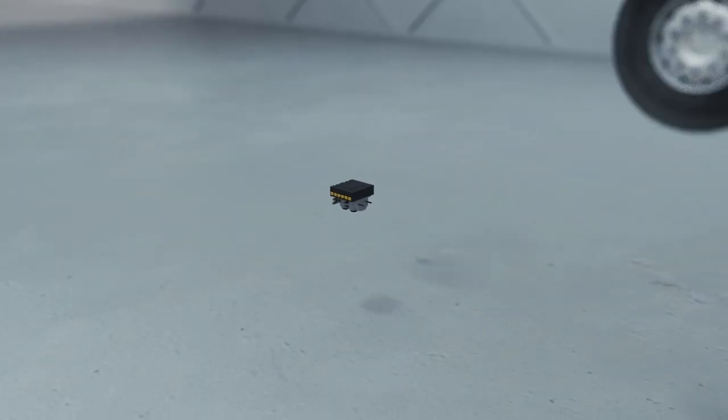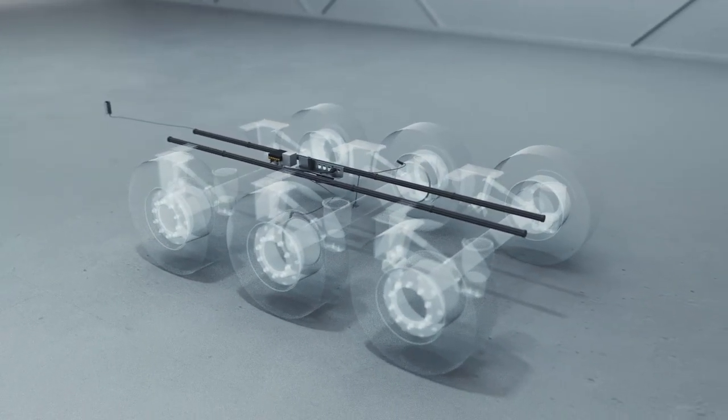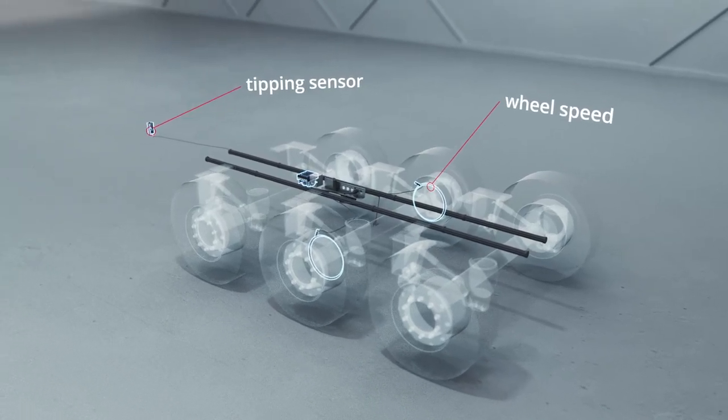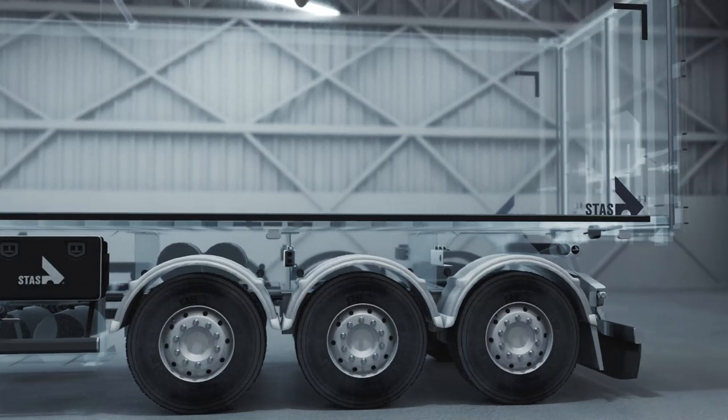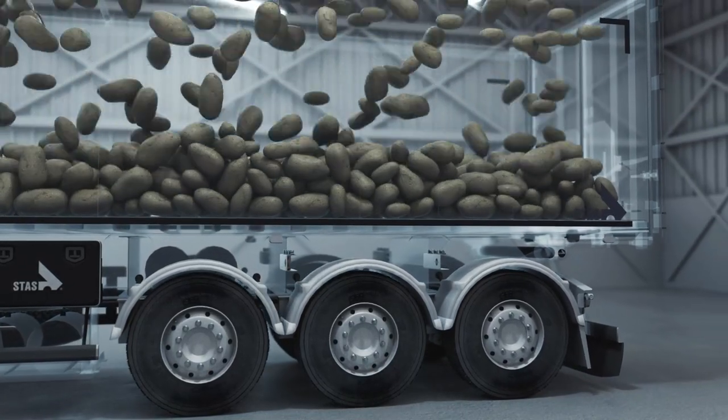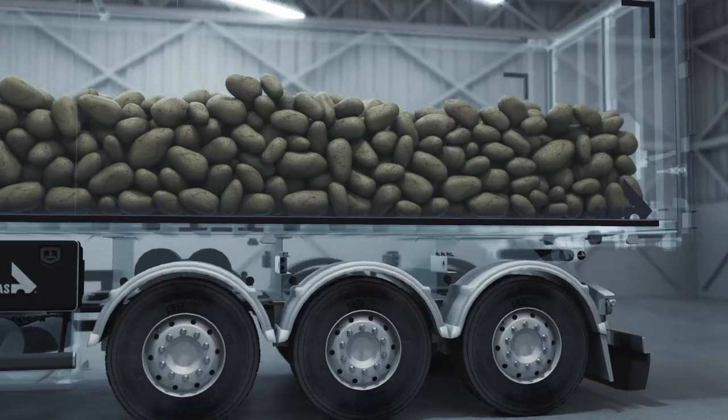The modulator can also take into account other factors, such as the wheel speed and tipping sensors. Because this modulator operates fully electronically, the system works much faster when loading your trailer.